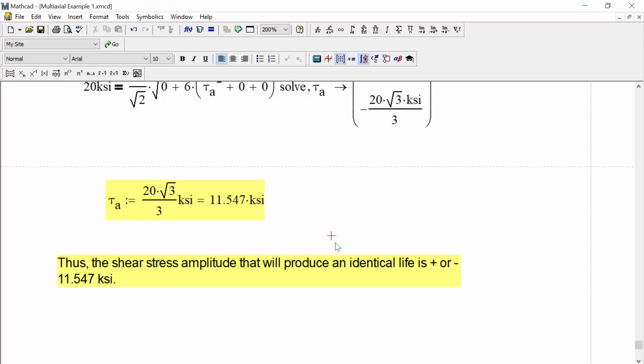So in this example, what we did was we used the von Mises equivalent stress as our failure criterion, as the criterion that decides failure. And if we can make that value, we calculate it to be 20 KSI, if we can solve for a state of stress that gives us that same value, then we know that we should also have an identical life. So that was our first example. I'll see you in the next video.